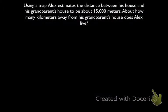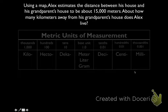So let's see how that works in a problem. This problem says that using a map, Alex estimates the distance between his house and his grandparents' house to be about 15,000 meters. About how many kilometers away from his grandparents' house does Alex live. Best way for us to do that, let's pull up our table again.